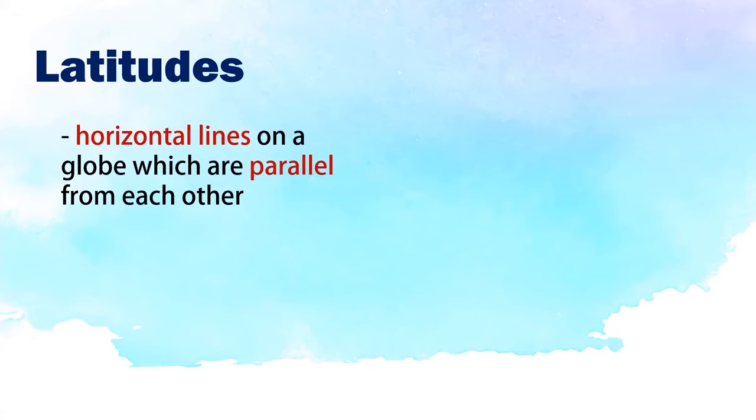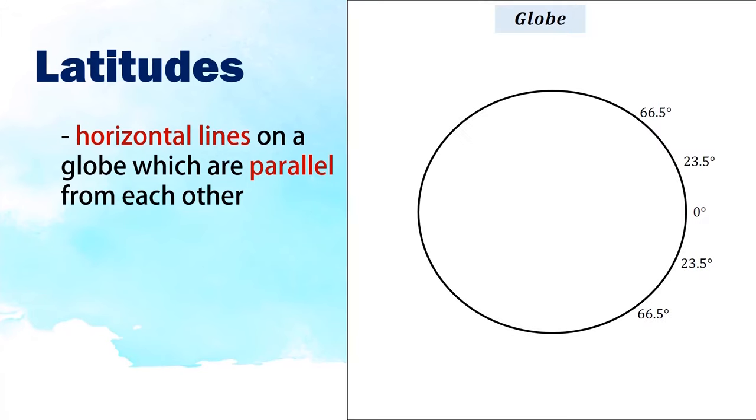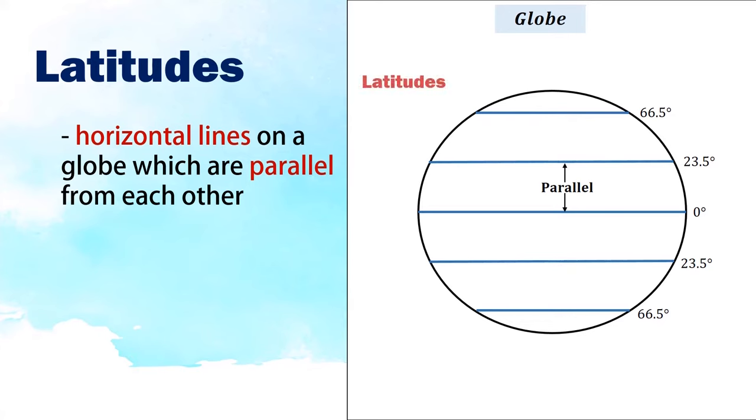Latitudes are horizontal lines on a globe which are parallel from each other. For example, in this illustration of the globe, the horizontal lines which are parallel from each other are the latitudes.